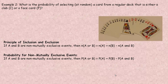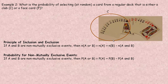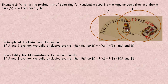That's not the case when events are non-mutually exclusive. In this example, we're asked: what is the probability of selecting at random a card from a regular deck that is either a club (C) or a face card (F)? I'm going to draw a Venn diagram. There are 13 clubs — ace through king — and 12 face cards. Notice that the jack, queen, and king of clubs are both a club and a face card, so that's the overlapping part — the reason these are non-mutually exclusive.